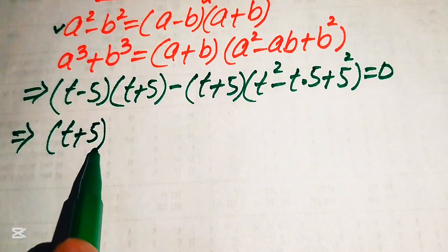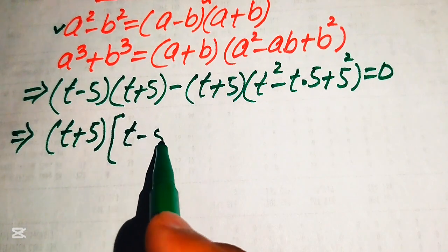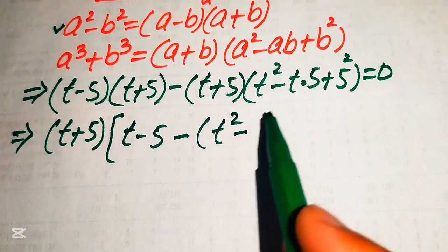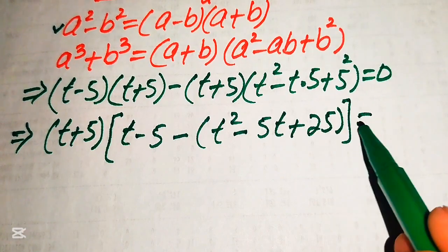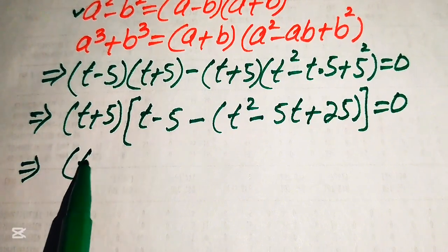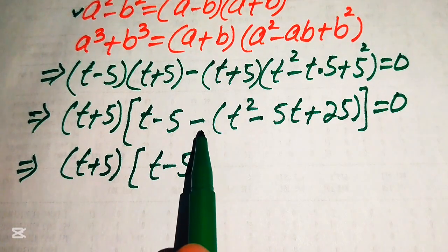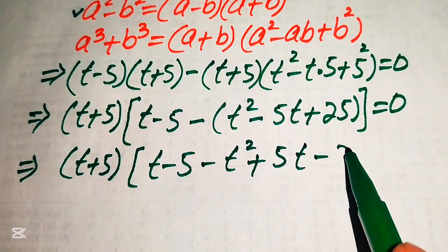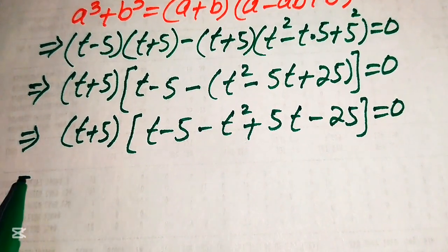Both terms involve (t plus 5), so we factor it out. Taking (t plus 5) common, the first term leaves (t minus 5), and the second term leaves (t squared minus 5t plus 25). So we get (t plus 5) times the quantity (t minus 5) minus (t squared minus 5t plus 25) equals 0.